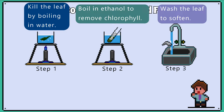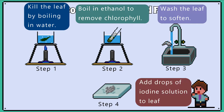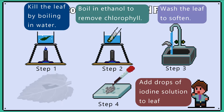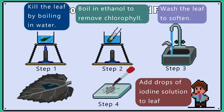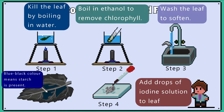Step 3 is to wash the leaf in cold water. This helps soften the leaf and it can help to spread the leaf over a tile. The final step is to add iodine to the leaf and observe the colour change. Now we have a test for whether photosynthesis took place in a leaf or not.